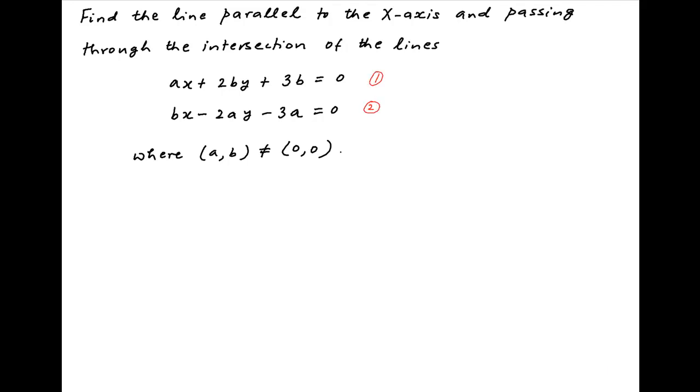Let's denote the given equations of the two lines by 1 and 2 respectively. Therefore, the equation of the line passing through the intersection of lines 1 and 2 can be written as